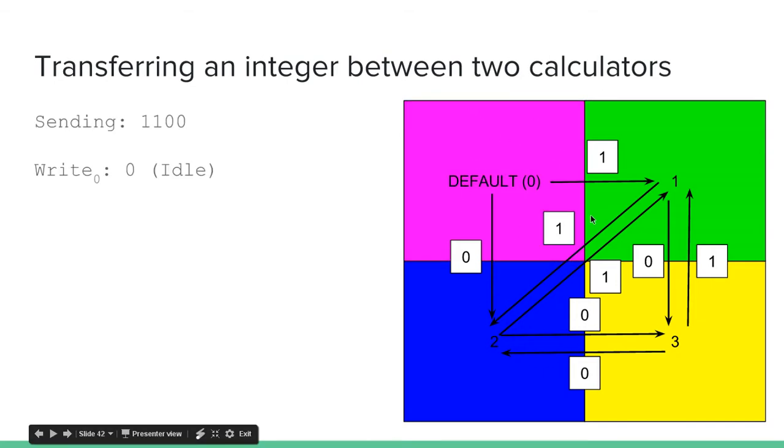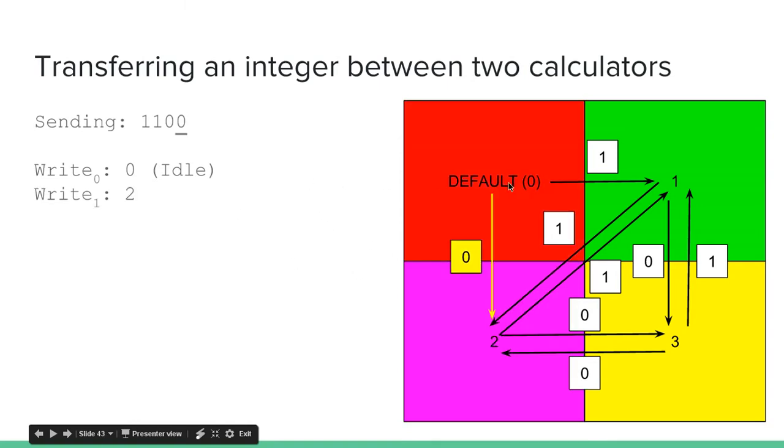We're going to start at the default. This is idle. We're not writing anything yet. Then we're going to change the value of the I/O port. We're going to write the value 2. So we started at 0 and then we wrote 2. Based on our protocol, that's defined as a 0.